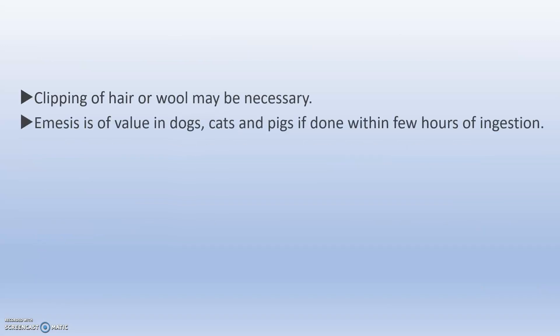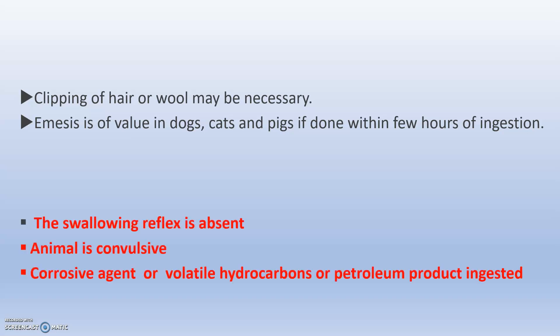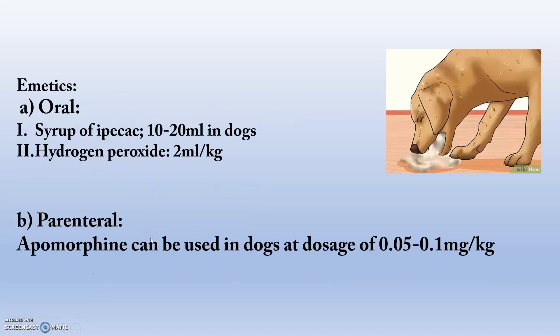Skin contact toxins can be eliminated by washing with benzene or alcohol, and clipping of hair or wool may be necessary for topical problems. Emesis is valuable in dogs, cats, and pigs when suspicion is within a few hours of ingestion. Emesis is contraindicated when the swallowing reflex is absent, when the animal is in a convulsive phase, or when corrosive agents or volatile hydrocarbons or petroleum products have been ingested. Main emetics for dogs include oral syrup of ipecac and hydrogen peroxide, and parenteral apomorphine.